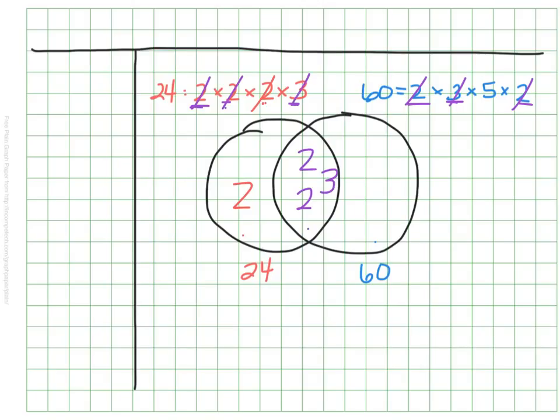I've taken care of all of my factors of 24. Let me look at the factors of 60. I've done the 2s, the 3, but there's a 5 over here, and this 5 is just a factor of 60 — it is not a factor of 24 — so I'm going to put it on the right-hand side. Well, that's great, but what was that for? What do I do with that?